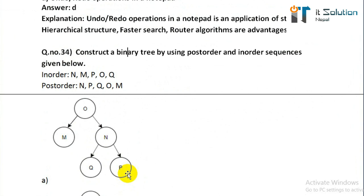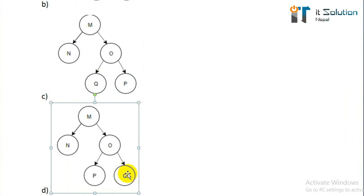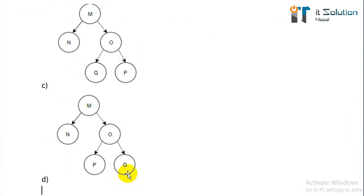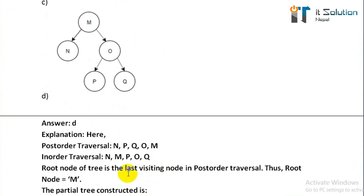Question number thirty-four: construct a binary tree using the post-order and in-order sequences given below. In-order: m, m, p, o, q. Post-order: m, p, q, o, m. Options A, B, C, D — the answer is D. Post-order traversal: m, p, q, o, m. In-order traversal: m, m, p, o, q.